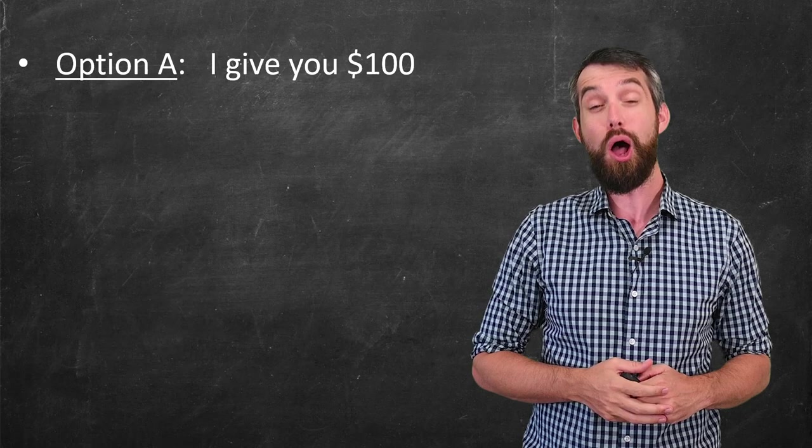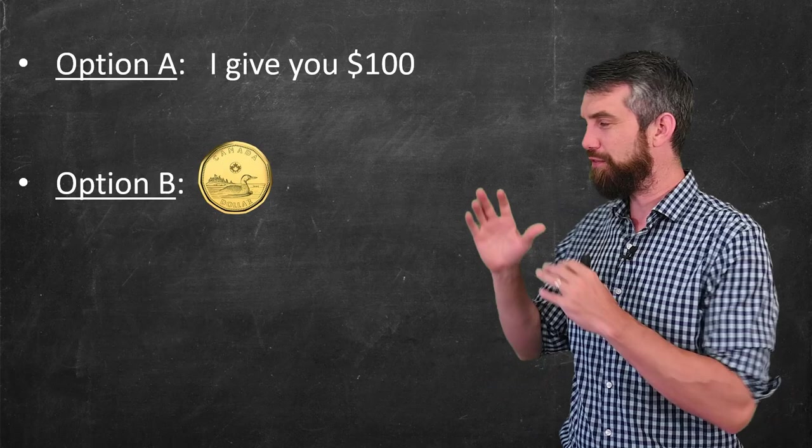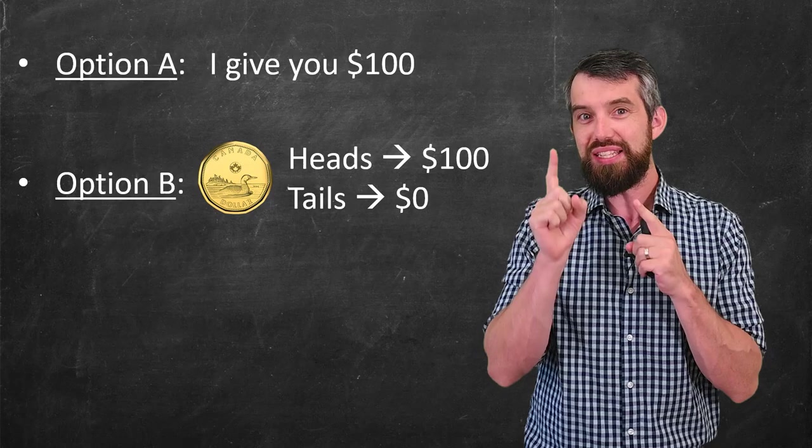what we're going to do is we're going to flip a coin. If the coin becomes heads, then you're going to get the $100. But if the coin is tails, you get nothing. So what should you choose? Option A or option B?